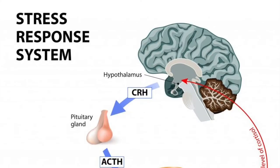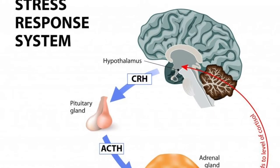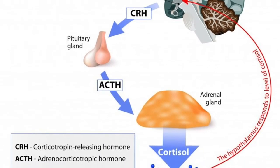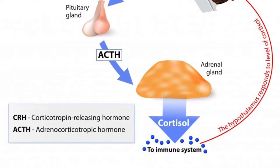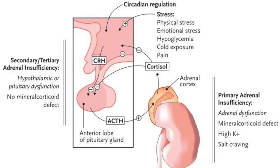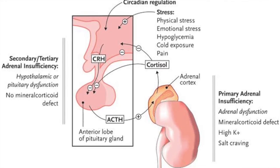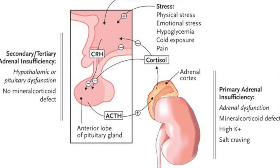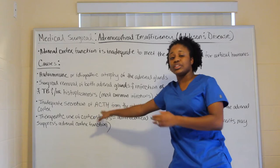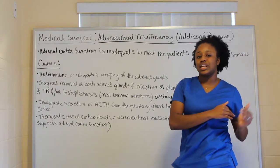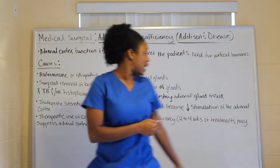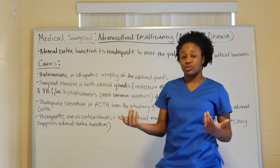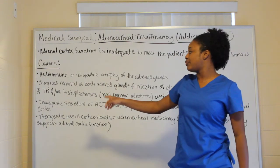Another cause is inadequate secretion of ACTH from the pituitary gland. The adrenal gland is supported by the ACTH hormone produced from the pituitary. If there's inadequate secretion of ACTH, it decreases the stimulation the adrenal gland receives — this can happen when the pituitary gland doesn't function well.